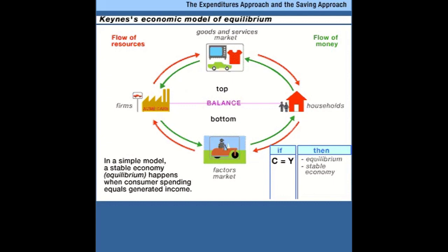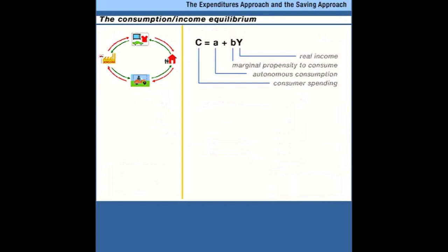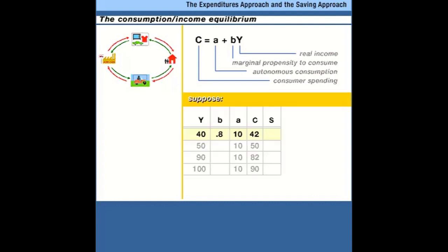The only way we have a stable or balanced outcome is when consumer spending is equal to real income. Let's look at a numerical example. Going back to our consumption function, this tells you what consumers are planning to spend as a function of their real income: autonomous consumption A plus the marginal propensity to consume B times real income. In our example, autonomous consumption equals 10 and the marginal propensity to consume equals 0.8, or eight-tenths.